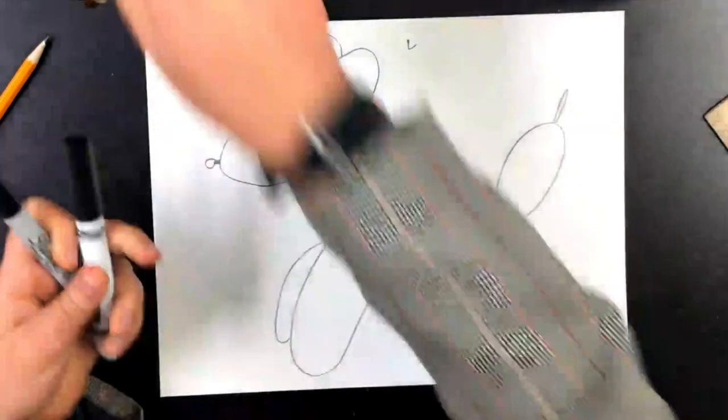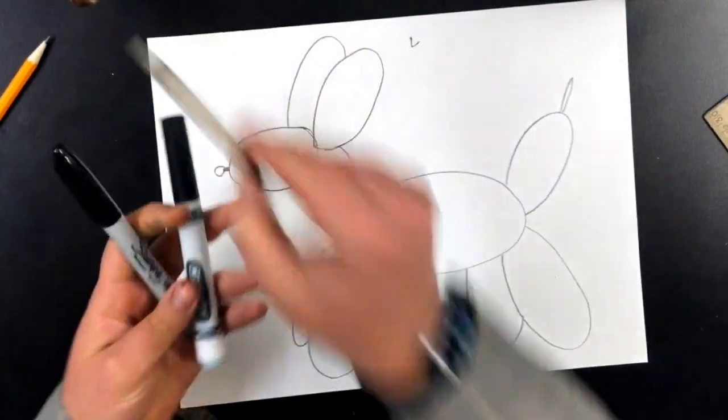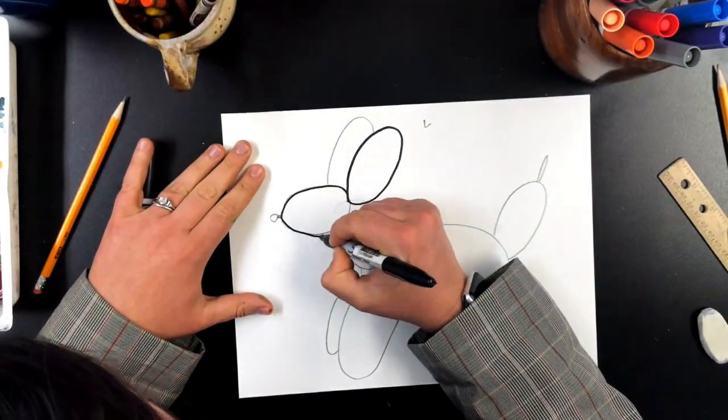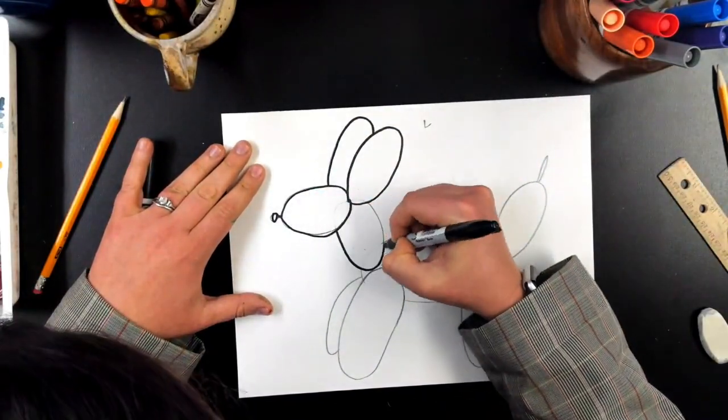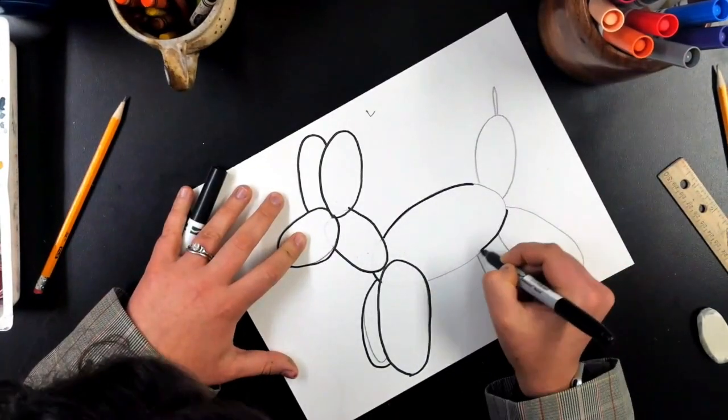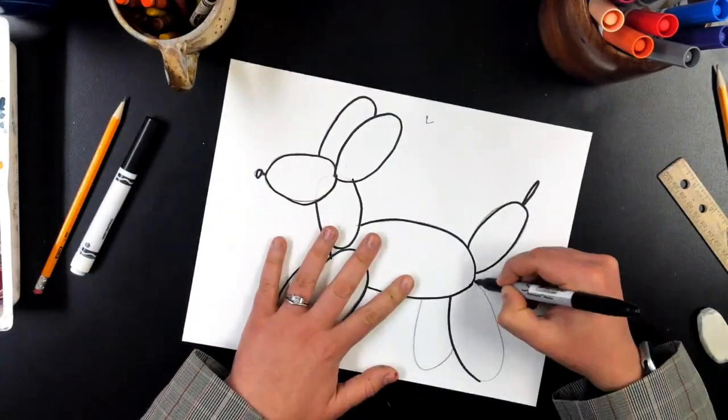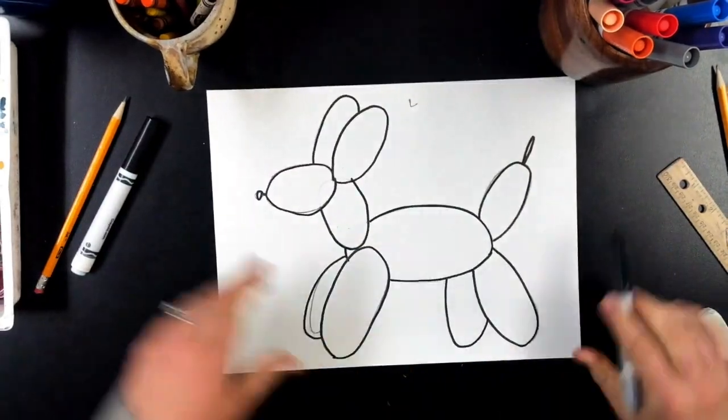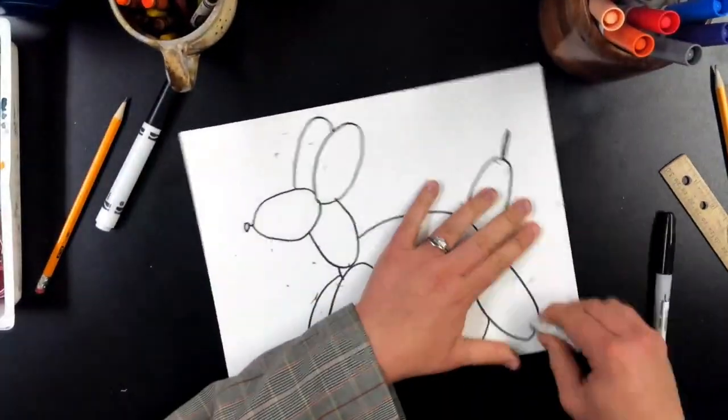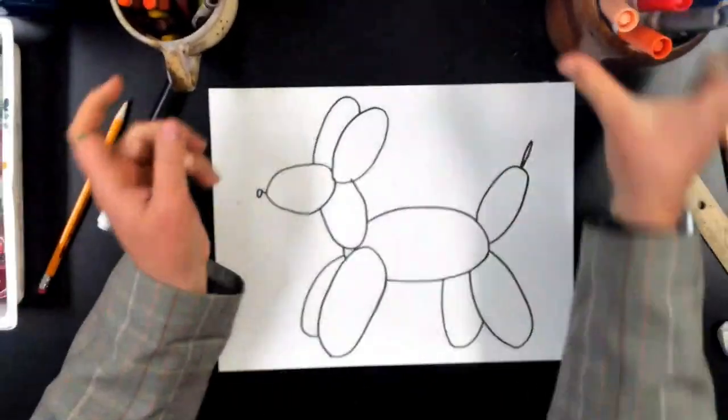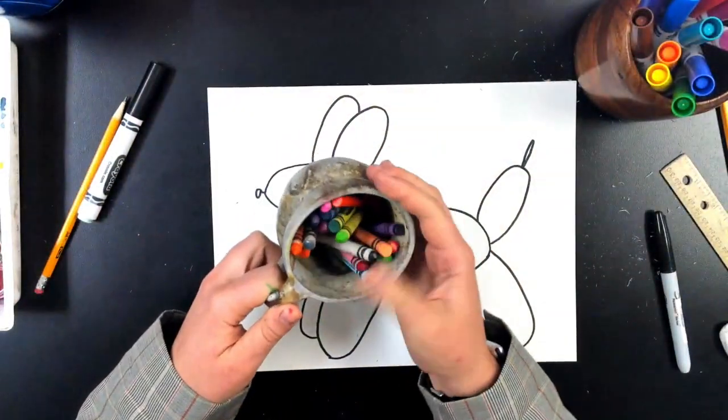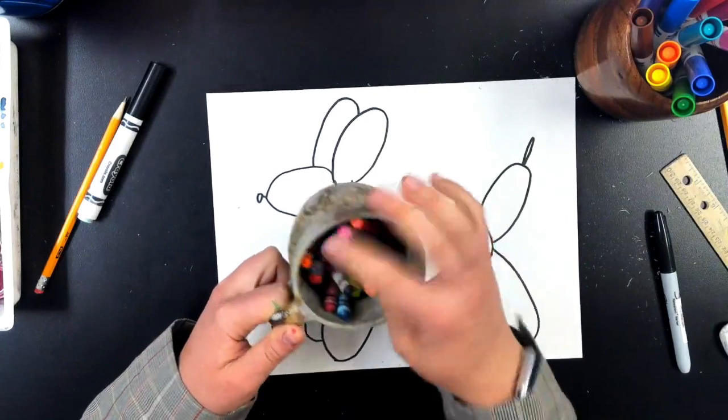So now that we're happy with our pencil drawing it is time to outline it. You could outline it in black crayon, black marker. I'm choosing black Sharpie, that is my favorite thing to outline with. So we're going over every pencil line. This is super fast but please take your time. And once you are finished with your outlining it is time to erase our pencil lines. And this is an extra tip that makes your piece look really professional, like you did it all in black marker on the first try.